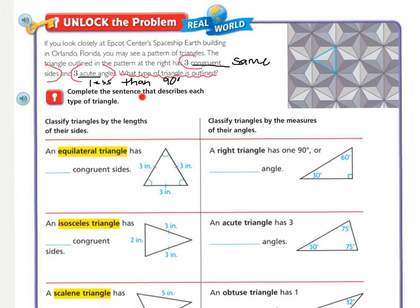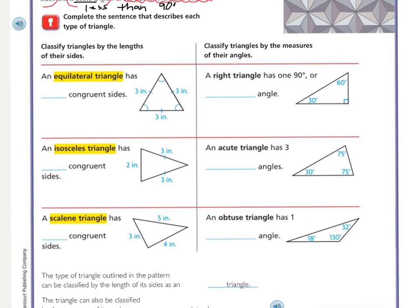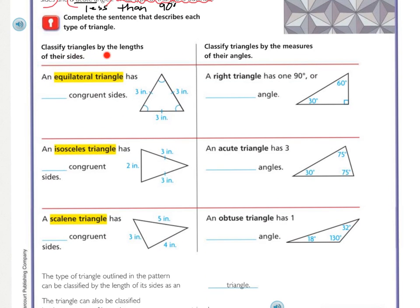We need to complete the sentence that describes each type of triangle. Classifying triangles by the lengths of their sides — there are two different ways to classify or group triangles. An equilateral triangle — equal being the key word — has blank congruent sides. Remember that congruent means the same, meaning same length. We can tell by the tick marks that all three sides are the same length.